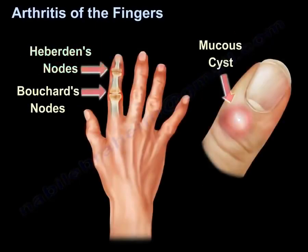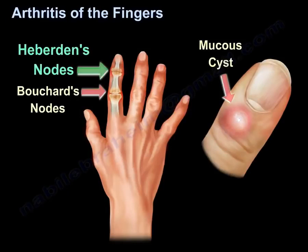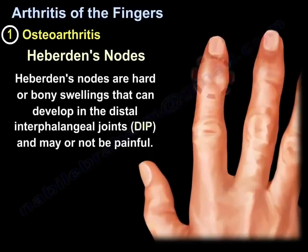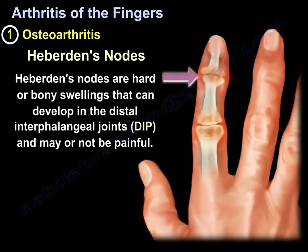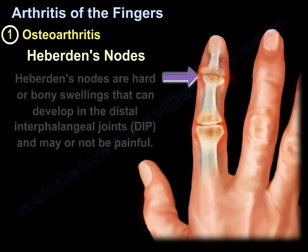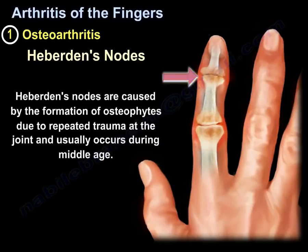Osteoarthritis of the fingers is characterized by Heberden nodes. Heberden nodes are hard or bony swellings that can develop in the distal interphalangeal joints, the DIP, and may or may not be painful. They are caused by the formation of osteophytes due to repeated trauma at the joint, and usually occur during middle age.